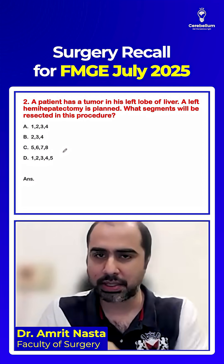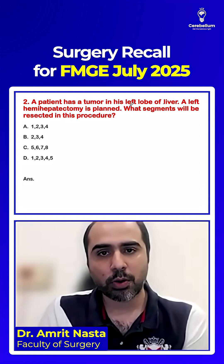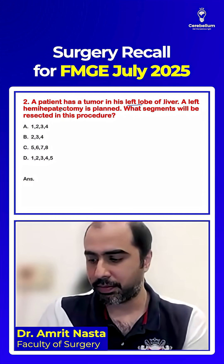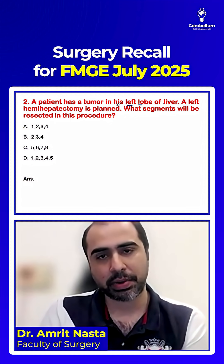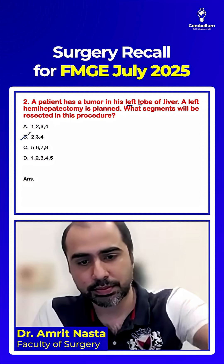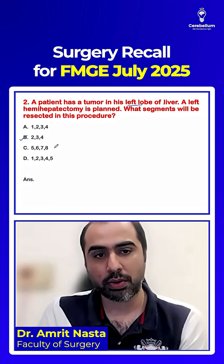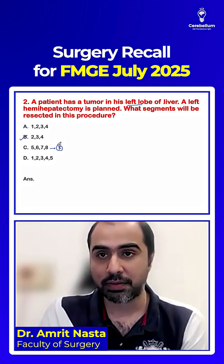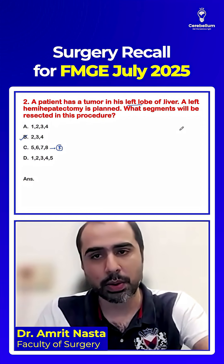This was a nice question — anatomy and surgery mixed. A patient had a tumor in the left lobe of the liver and a left hepatectomy was planned. The segments resected in a left hepatectomy are segments 2, 3, and 4. The right lobe is segments 5, 6, 7, and 8. Segment 1 is not part of the left lobe — segment 1 is the caudate lobe.